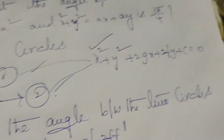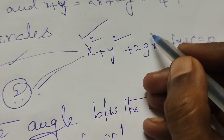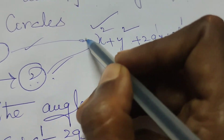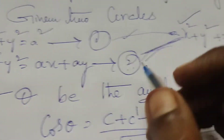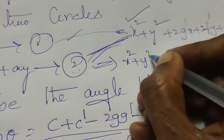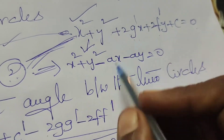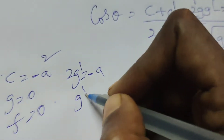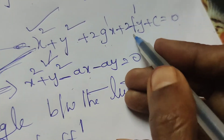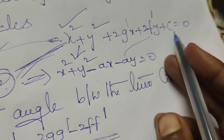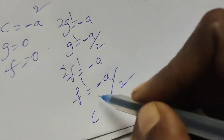Comparing the second equation: rewrite it as x² + y² − ax − ay = 0. Comparing, 2g' = −a, therefore g' = −a/2. And 2f' = −a, therefore f' = −a/2. There is no c' value, so c' = 0.